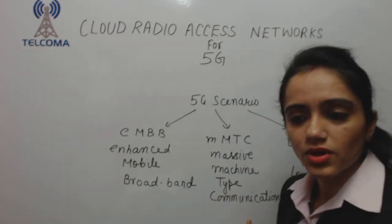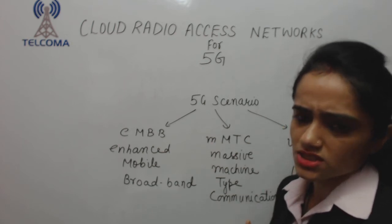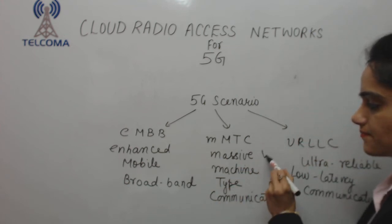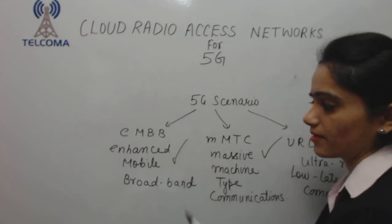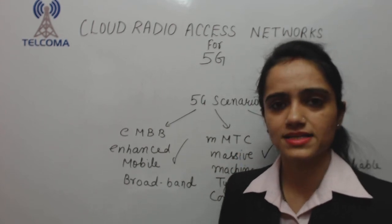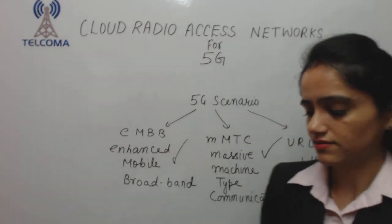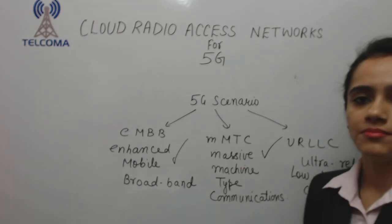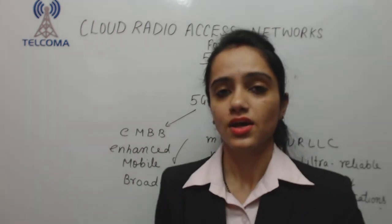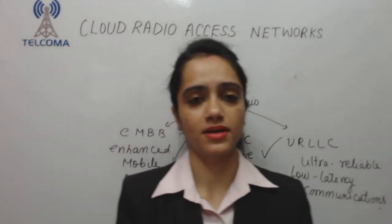Massive Machine Type Communication covers monitoring and automation of buildings, infrastructure, smart agriculture, logistic tracking, and fleet management. It provides high-density connections, low complexity, low cost, and long battery life, which are essential features for machine type communication.